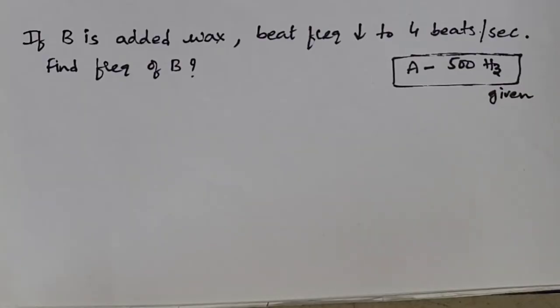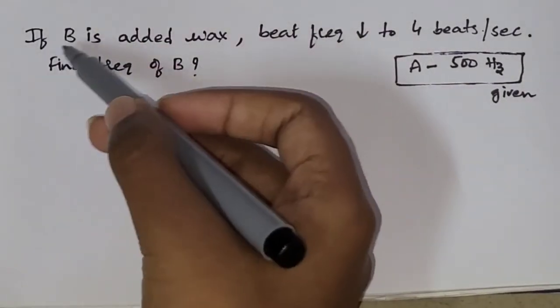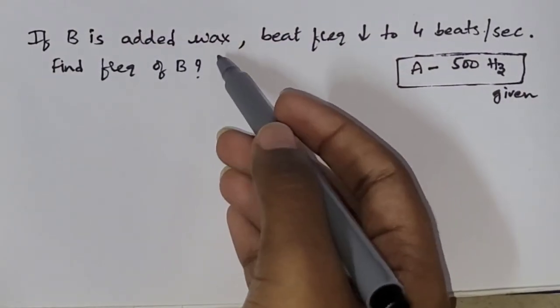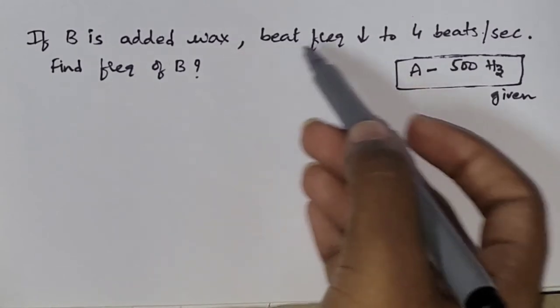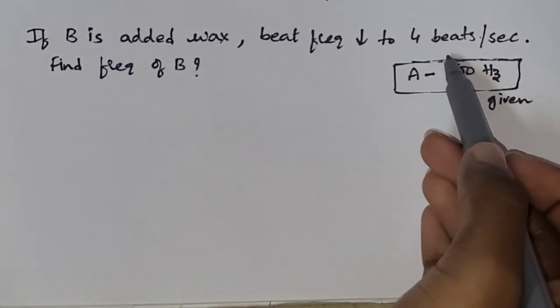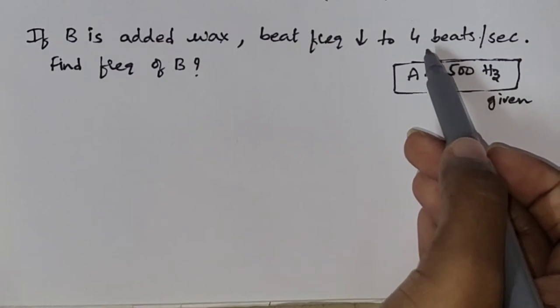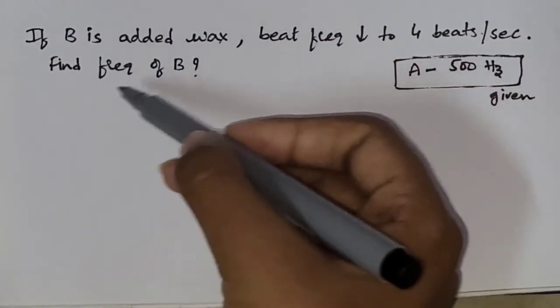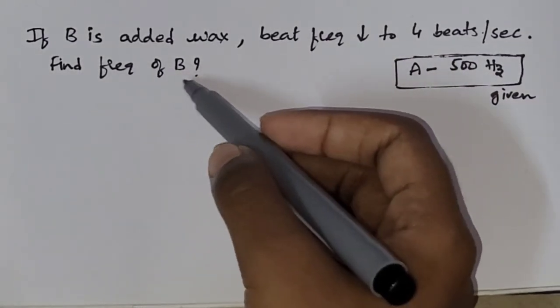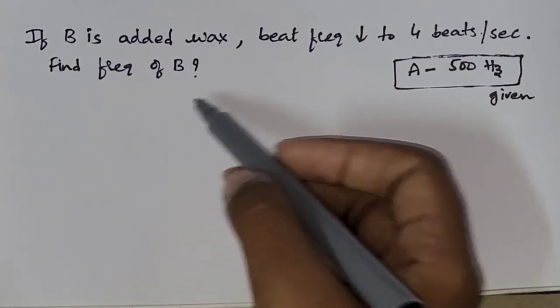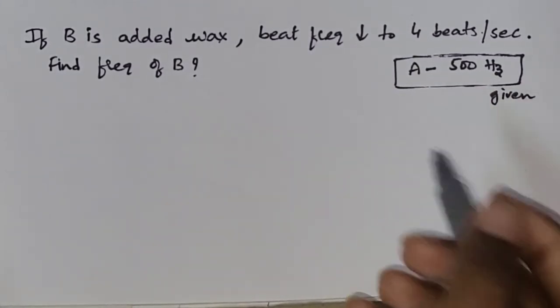In the previous question, we have seen increase in case. Now, we will see decrease in case. Here, the set if B is added wax, wax means frequency get decreased and it is decreased to 4 beats per second. Initially, it was 5 beats per second, right? So, they are asking to find out the frequency of B. Frequency of A is 500. It is given.